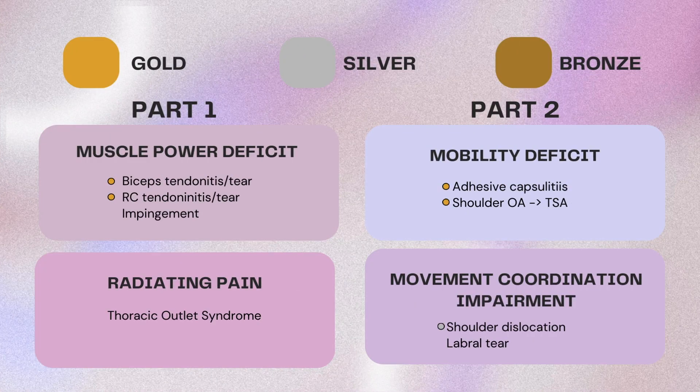We're going to break it down into two videos, breaking it down by what type of diagnosis we're going to talk about. It's split into four categories: muscle power deficit, radiating pain, mobility deficit, and movement coordination impairment. That kind of just groups these diagnoses together based on the type of tissue that is impaired or based on the type of symptoms that might present.